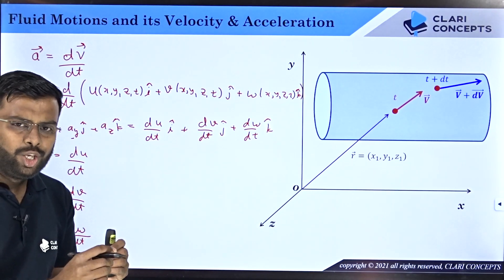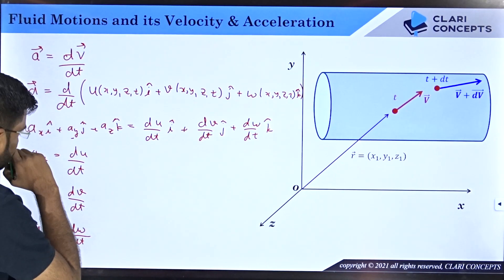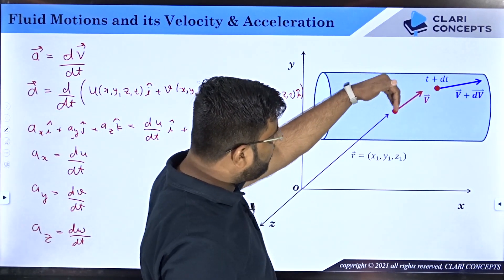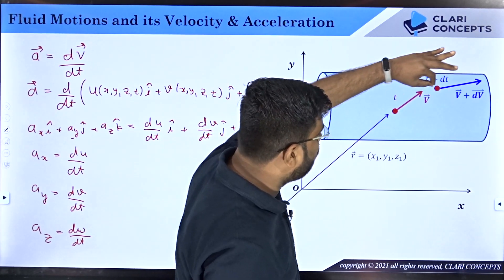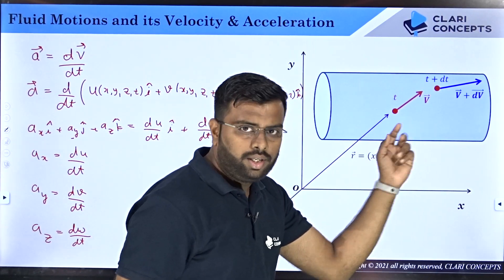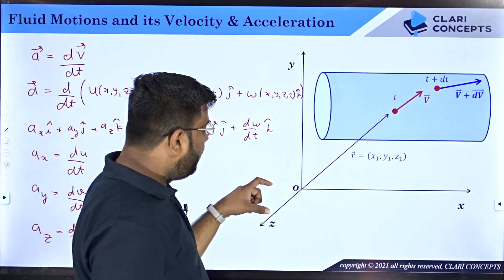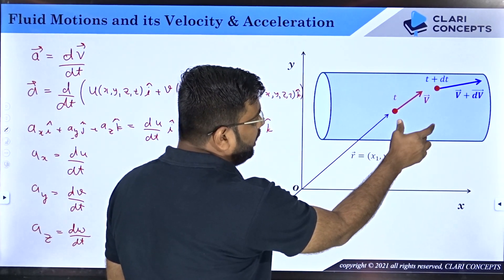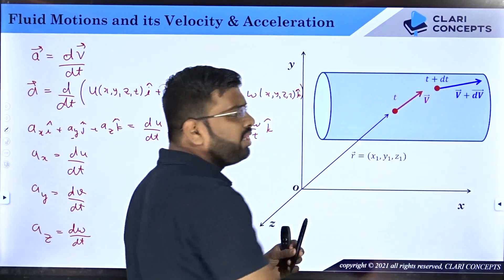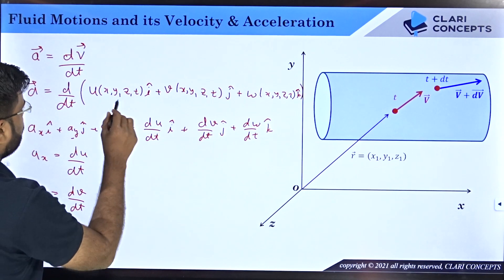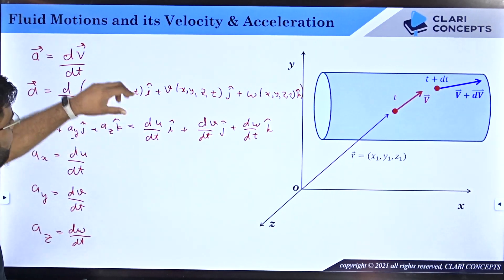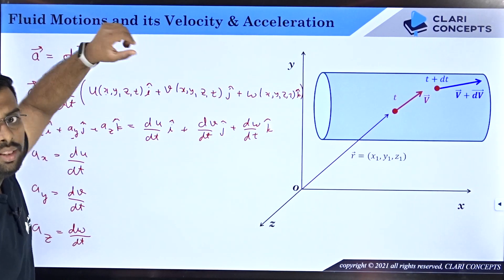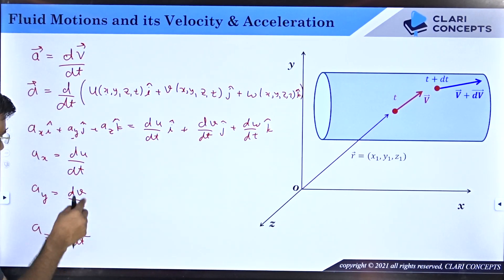Now, du/dt represents the total change in u with respect to time. When a particle moves from one position to another, the x-coordinate has changed, the y-coordinate has changed, the z-coordinate has changed, and time has changed. The changes are dx, dy, dz, and dt respectively. Since u is a function of four independent variables x, y, z, and t, we use partial derivatives to represent the change of u with respect to each independent variable.